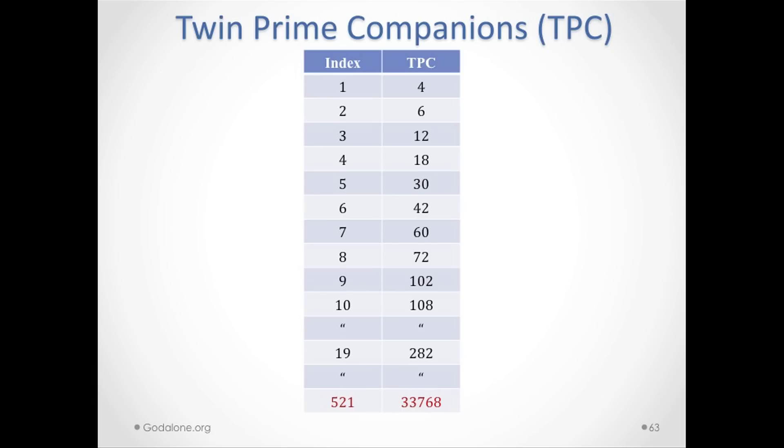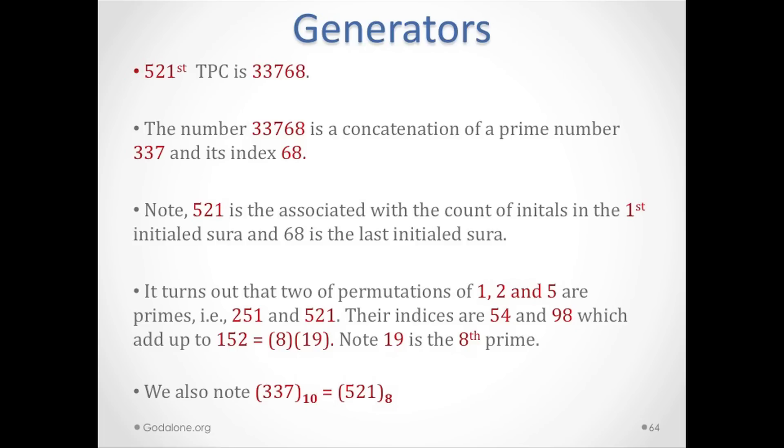Now, looking at twin prime companions: the 521st TPC is 33768. The number 3368 is a concatenation of a prime and its index—the 68th prime is 337. Note that 521 is associated with the count of initials in chapter 1, because 521 times 19 gives you 9899, and 68 is the last initial chapter. This corresponds to the first initial chapter; this corresponds to the last initial chapter.